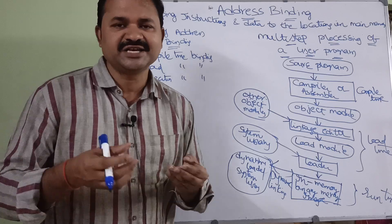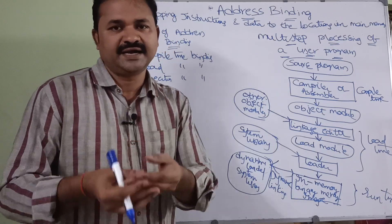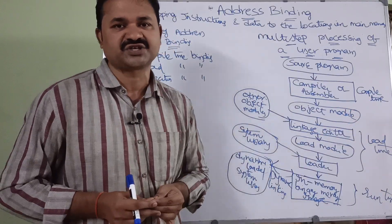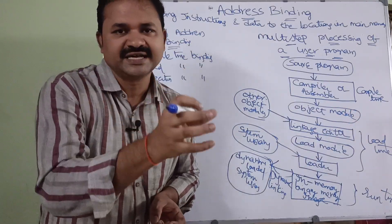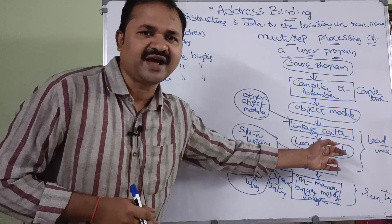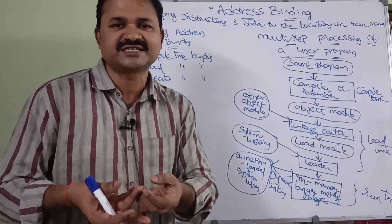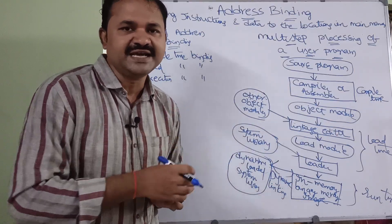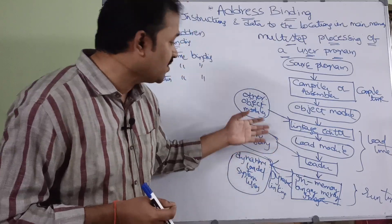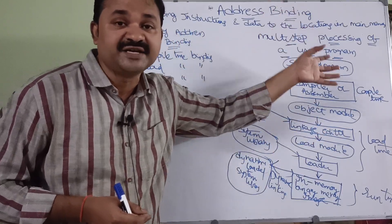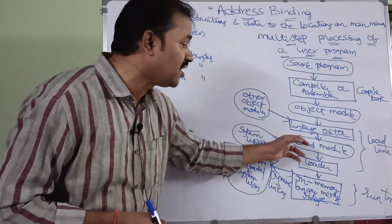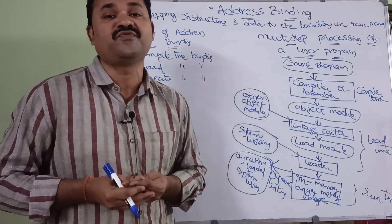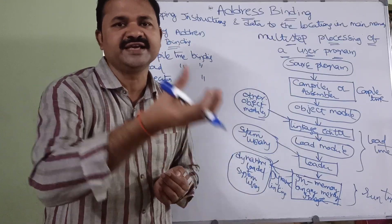Let us understand what an object file is with a C program example. If we use a printf function, which is available in stdio.h, the compiler produces the printf object file, which is linked by the linker. Similarly for a scanf function, the compiler produces its object file. The linker links all these object files into a single executable file, which is ready for execution.